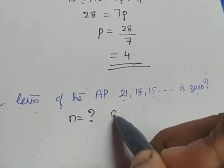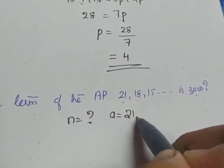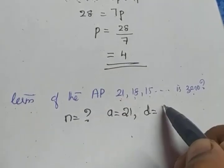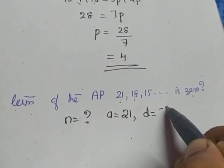The AP is given, which all values we can write. We can write a. A is 21. D is the common difference. 18 minus 21, 18 minus 21 gives you the value minus 3.